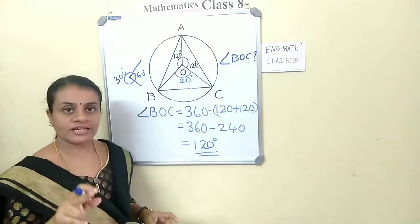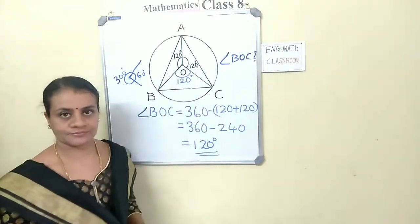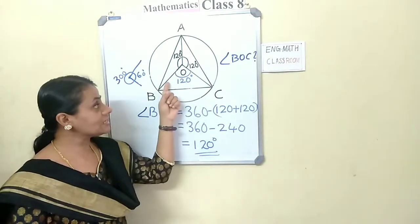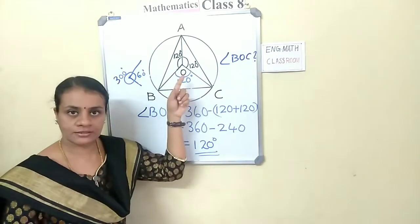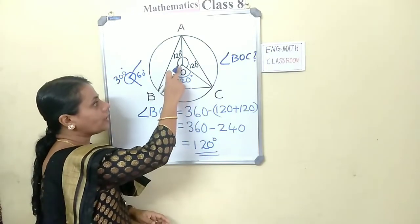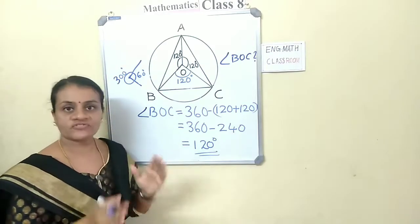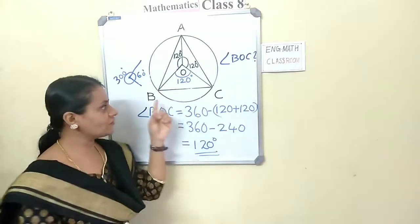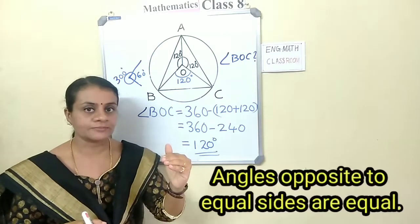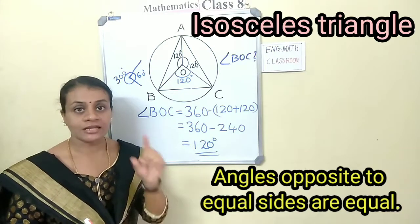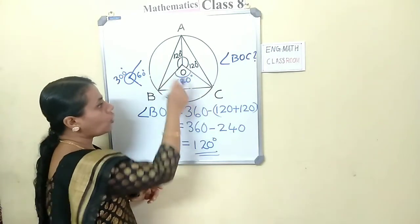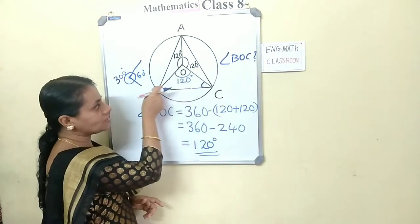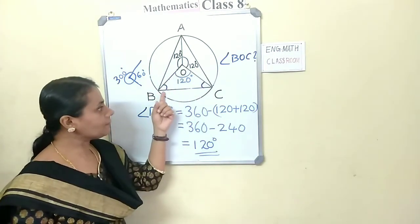Now look at triangle BOC. The sides BO and CO are radii of the circle, and radii are equal, so BO and CO are equal in length. This makes triangle BOC an isosceles triangle. In an isosceles triangle, angles opposite the equal sides are equal — so angle OBC and angle OCB are equal.